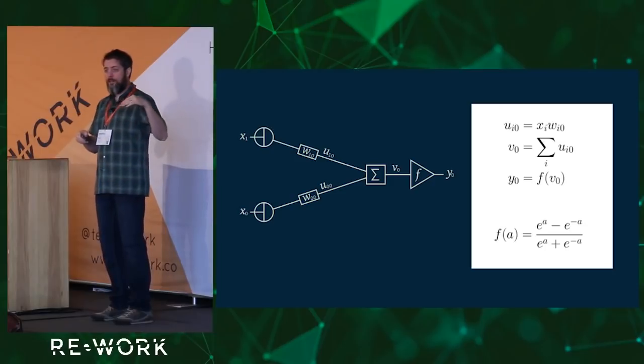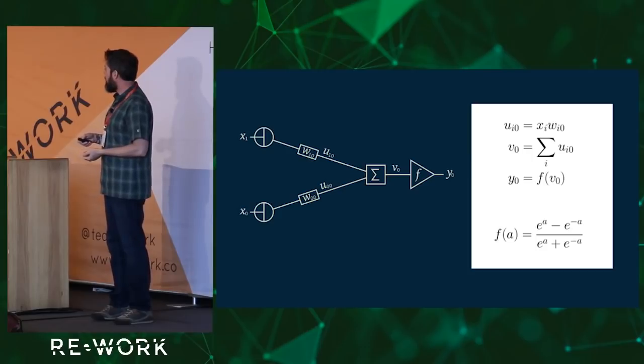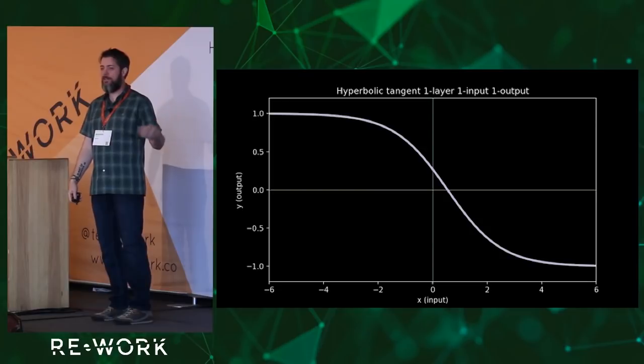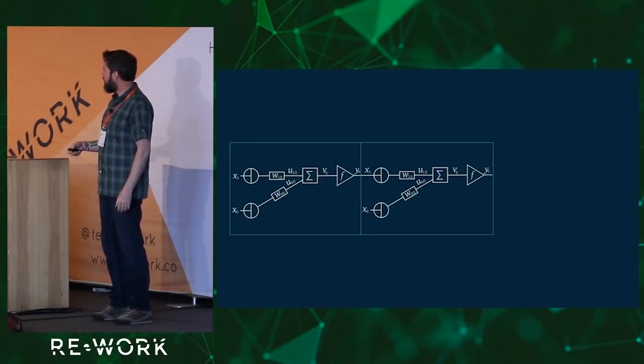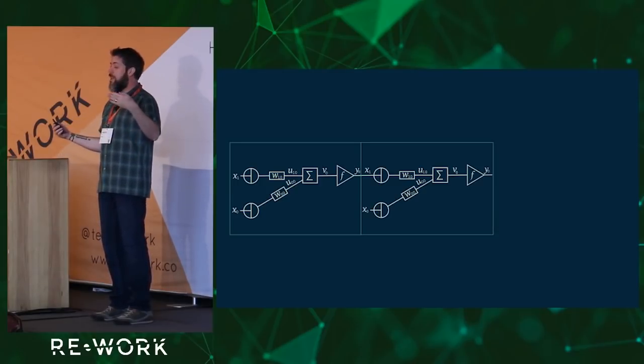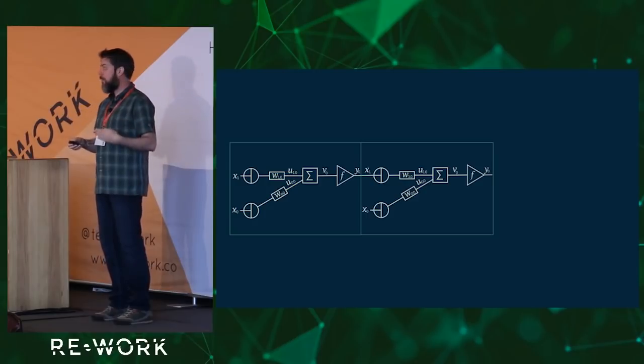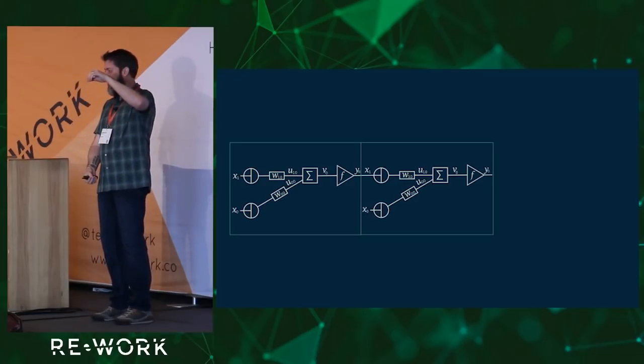There's another squashing function we can use. It's very similar to a logistic function called a hyperbolic tangent. Despite the fancy name, it's almost identical mathematically. It just goes between minus one and plus one. Again, it's just different variations of an S shape. But this one's kind of nice, because it does have that symmetry between minus one and plus one. Now, this, you can take the output of one layer and connect it to the input of another layer.